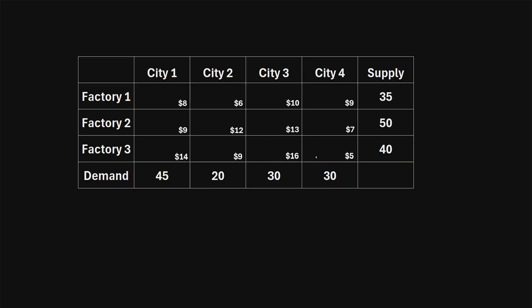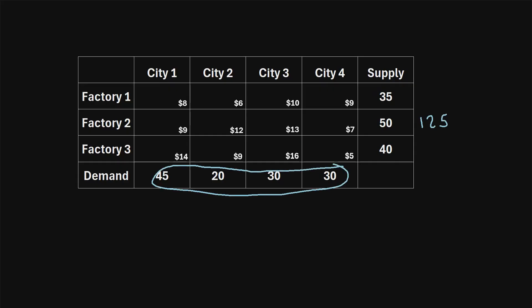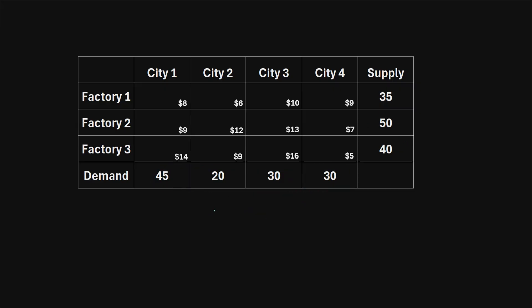Within the cells of the table, I've listed the unit shipping cost. To ship one good from factory one to city one has a unit shipping cost of eight dollars, and to ship one good from factory one to city two has a unit cost of six dollars, and so on. The total supply adds up to 125, and the total demand is also 125, so this is a balanced transportation problem. The goal is to fulfill the demand of each city and minimize the shipping cost while doing so.